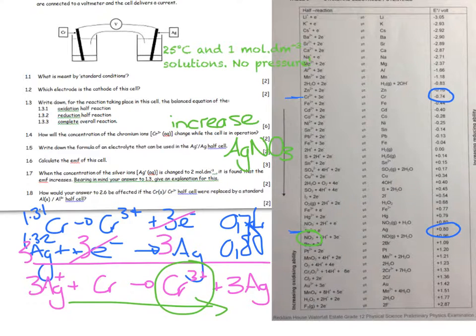Calculate the EMF of the cell. We've got 0.74 plus 0.80, so that turns out to be 1.54. Don't forget to give it a unit: volts.